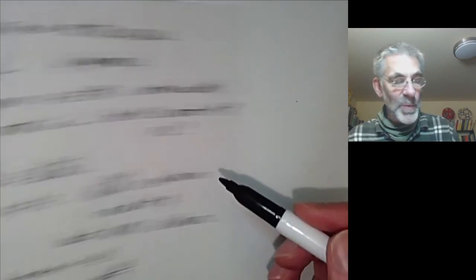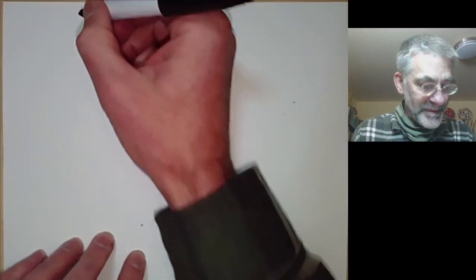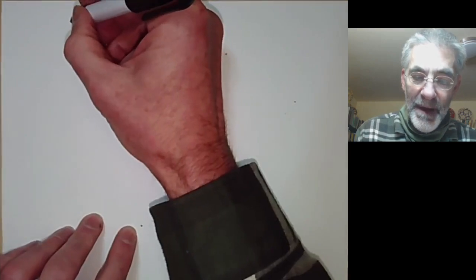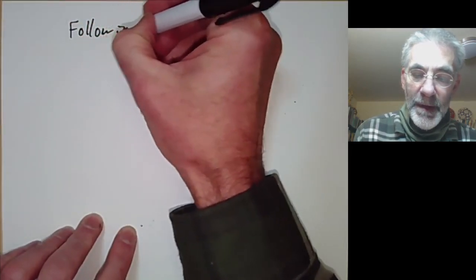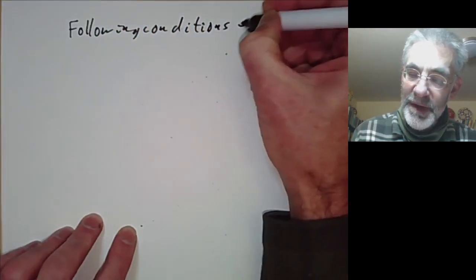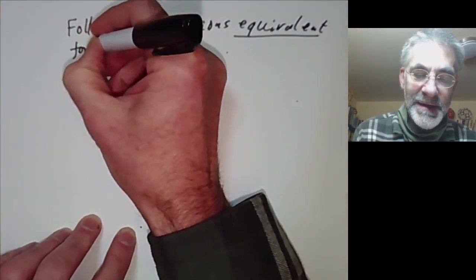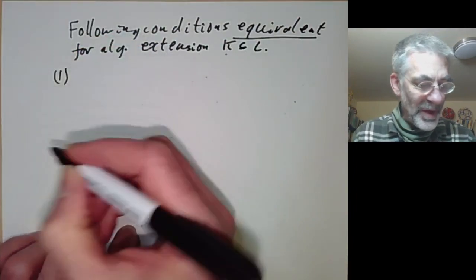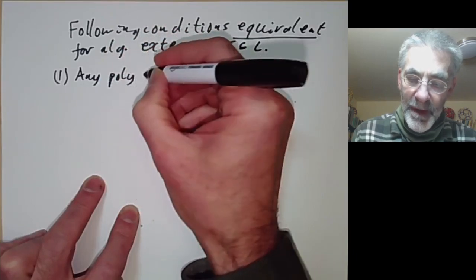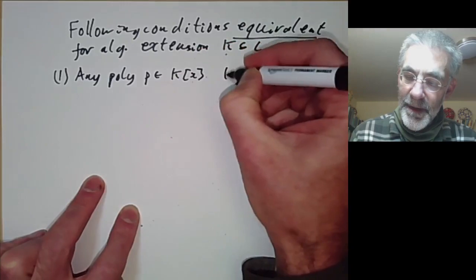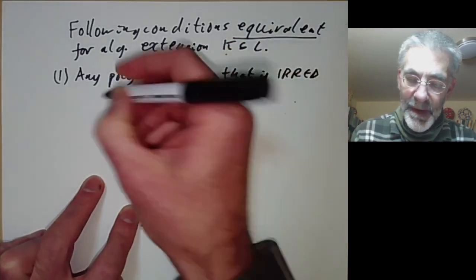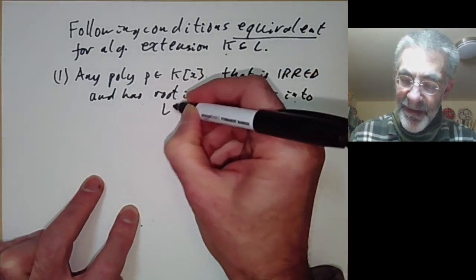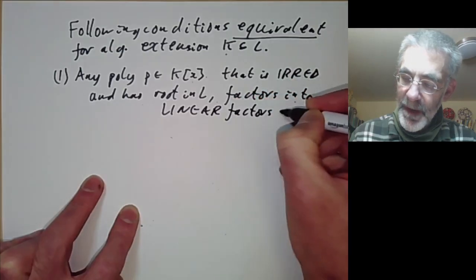There are three equivalent conditions for an extension to be normal. The following conditions are equivalent for an algebraic extension k ⊂ L. The first property is that any polynomial p in k[x] that is irreducible and has a root in L factors into linear factors in L[x].